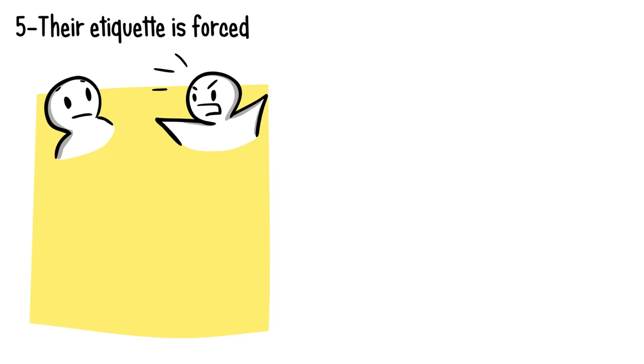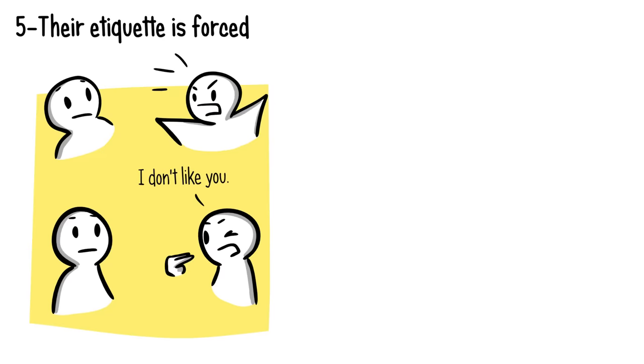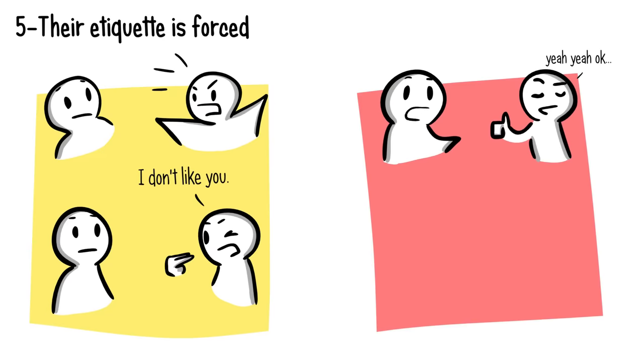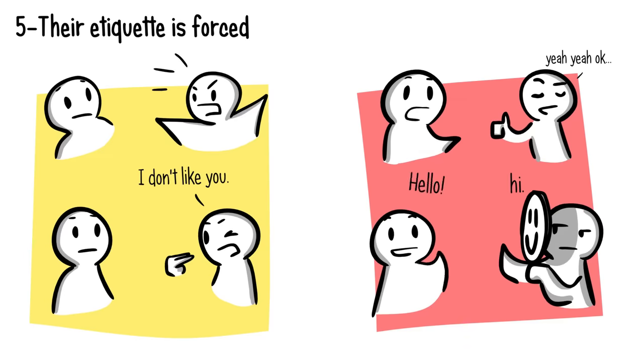Number five: their etiquette is forced. When someone outwardly dislikes you, they will be loud about it, whether it's lashing out on you regularly or telling you to your face. When they secretly dislike you, however, they might try to get along just to avoid conflict. Whether it means forcing a smile or doing things to keep the peace, they will keep the surface clean between you two. Deep down though, they may think ill of you and display this through their passive-aggressive behavior.